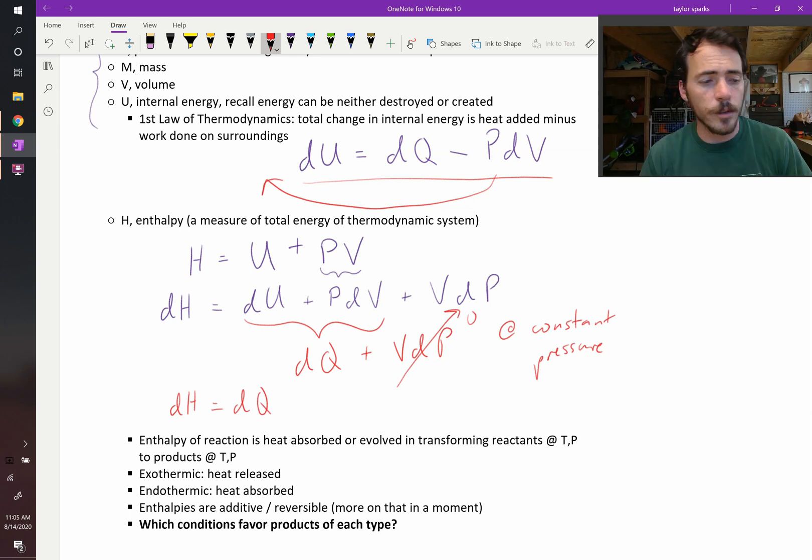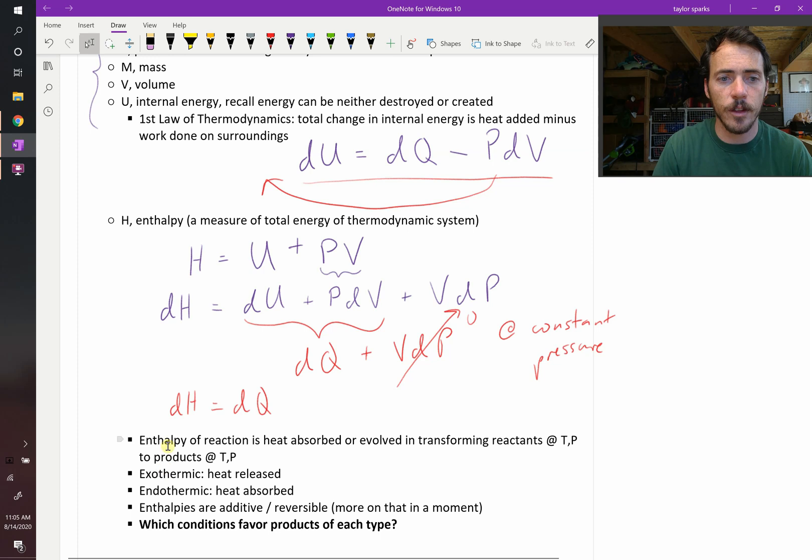That's probably what you learned in chemistry. When they talked about enthalpy, they were talking about endothermic versus exothermic reactions. When a reaction takes place, there's a change in enthalpy, and you saw that as a change in heat. Heat either given off or heat being absorbed. And that is, in fact, the definition that you often see. Enthalpy of a reaction is the heat absorbed or evolved in transforming reactants at some constant temperature and pressure to products at some temperature and pressure. And we call this exothermic or endothermic.